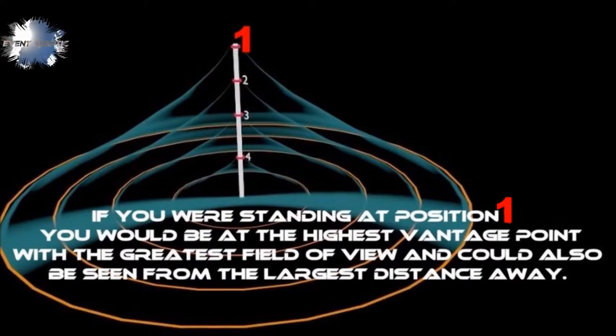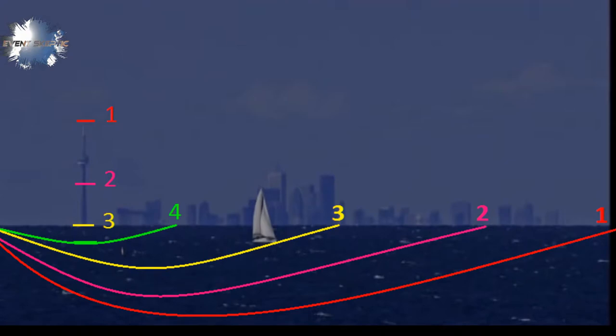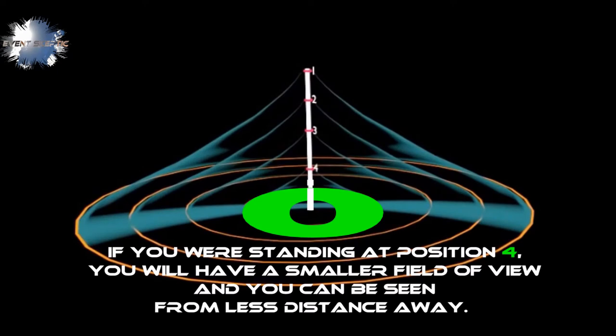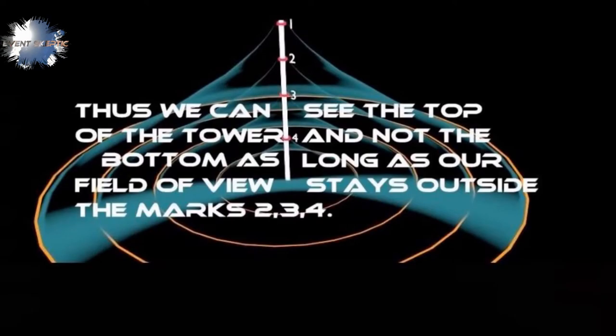If you were standing at position 1, you would be at the highest vantage point with the greatest field of view and you would be seen from the largest distance away. If you were standing at position 4, you will have a lower field of view and you can be seen from far less distance away. Thus we can see the top of the tower and not the bottom as long as our field of view stays outside the marks 2, 3 and 4.